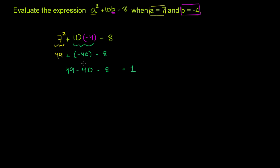49 minus 40 is 9, minus 8 is 1. And we are done. We've evaluated the expression when a is equal to 7 and b is equal to negative 4.